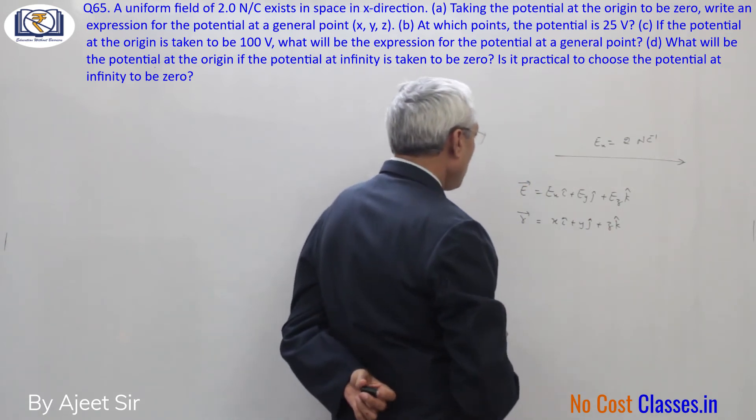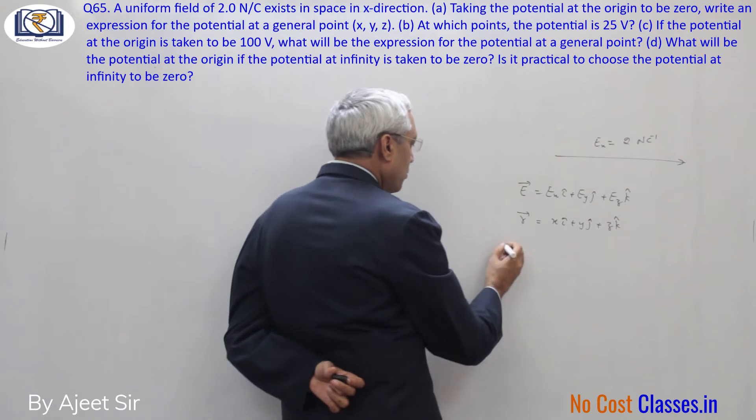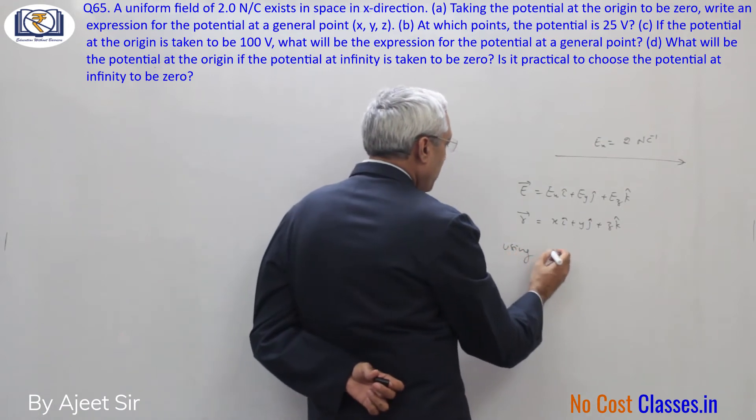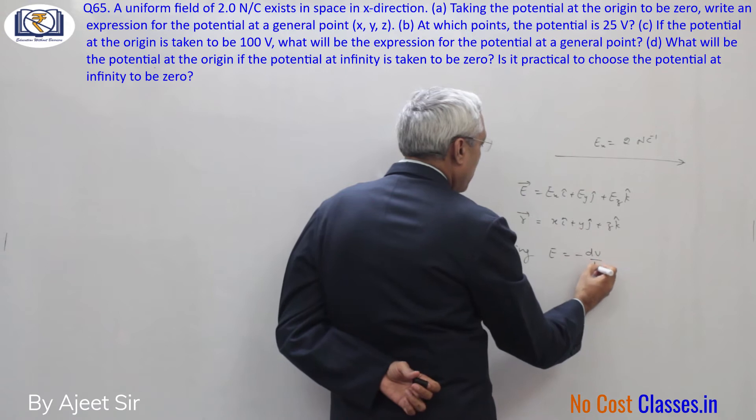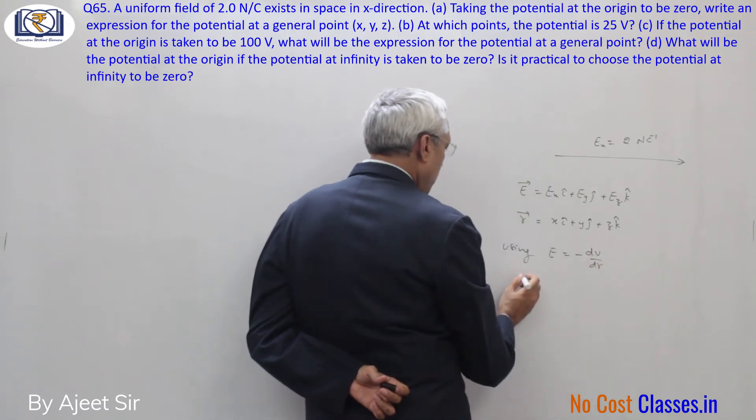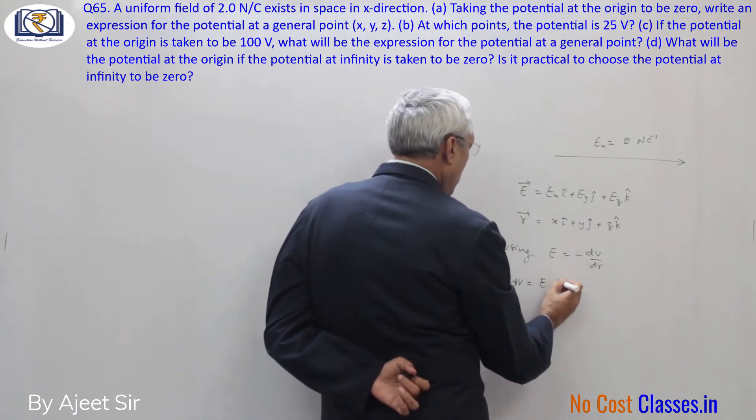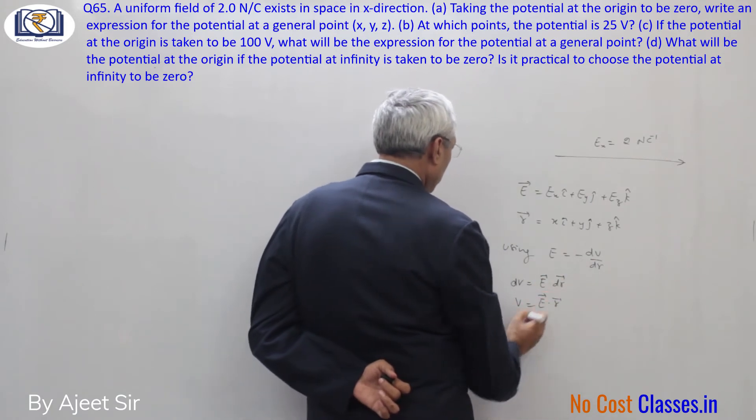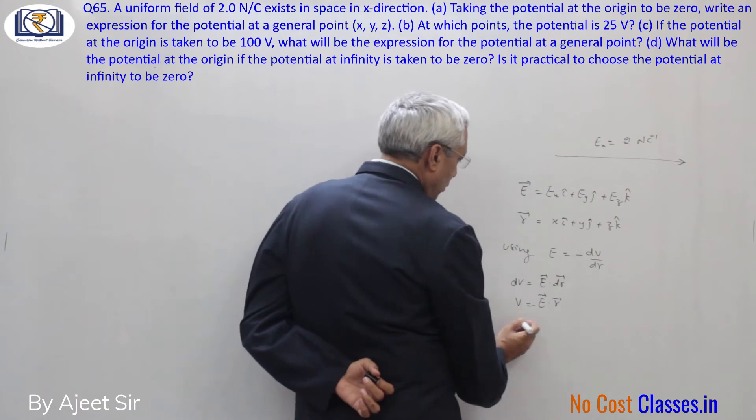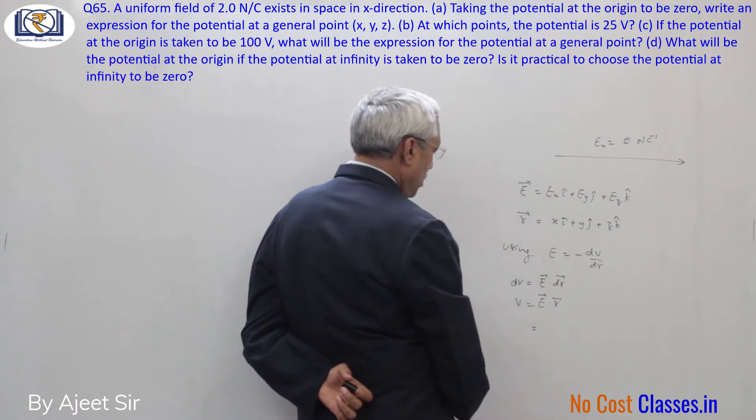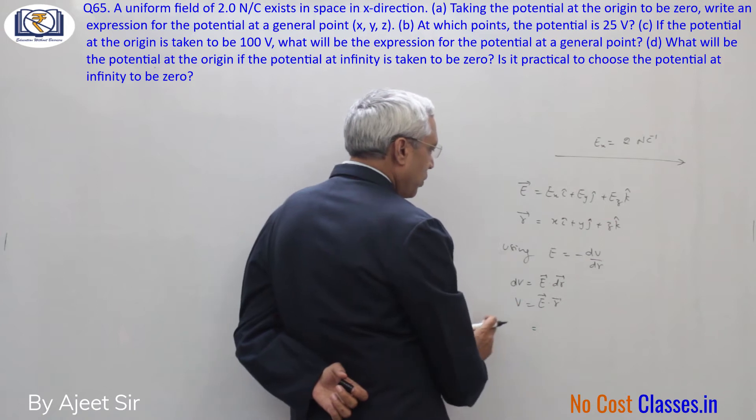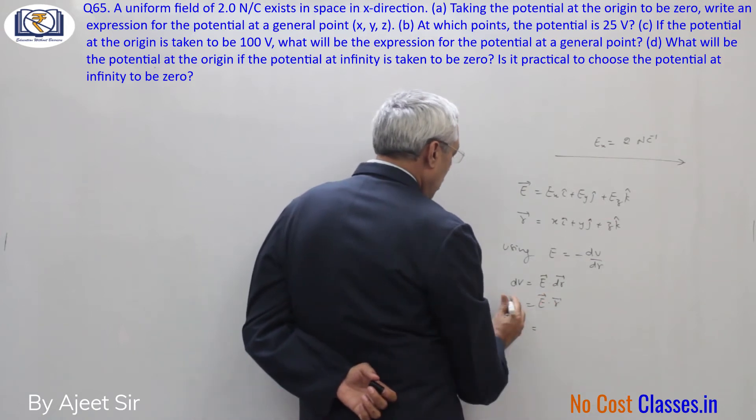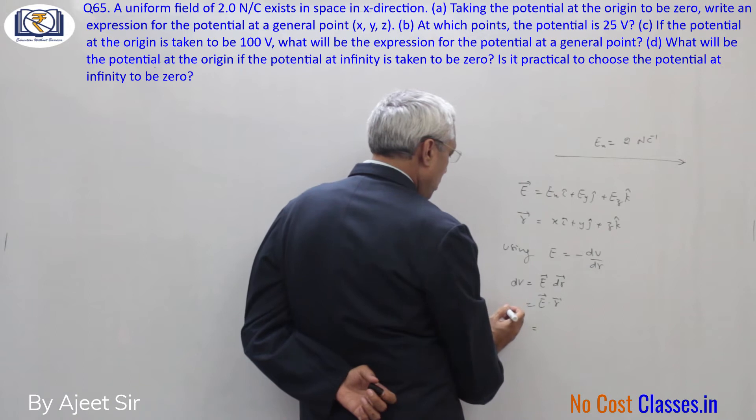So x, y, z gives us this position vector. Using E equal to minus dV by dr, we can write dV equal to E dot dr, or V equal to E dot r. Here V is the potential difference component delta V.